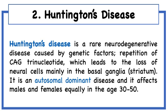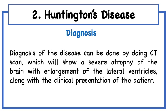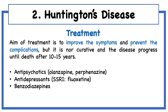Second, Huntington disease, which is a genetic neurodegenerative disease — remember that it is autosomal dominant. Causes are purely genetic. There will be repetition in the CAG trinucleotide leading to chorea, which is purposeless involuntary movements like dancing, as well as dementia because it is a degenerative disease, and other psychotic symptoms. Diagnosis is mainly by clinical presentation and CT scan will show obvious brain atrophy. Again, treatment is not curative and aims to prevent the complications of the disease.